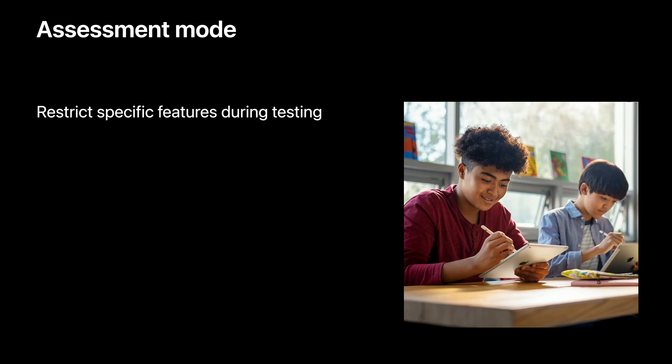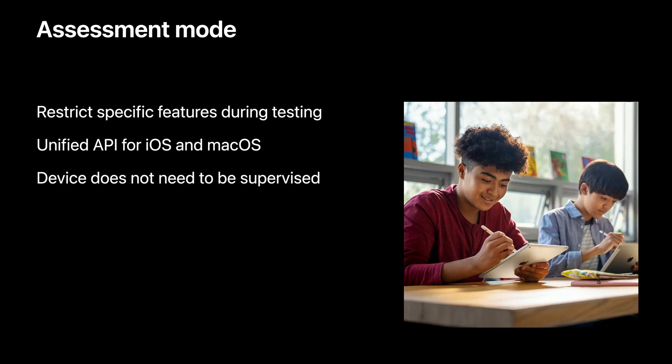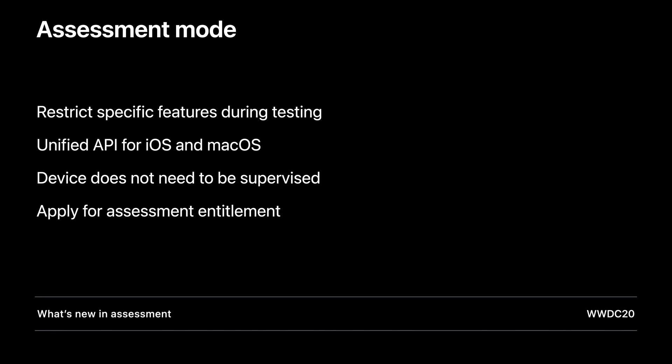Finally, assessment mode. This is the right mode when your app aims to prevent unfair advantages by restricting certain features during testing. Turn off autocorrect, spell check, and single app mode locks to the app so the test taker can't access outside notes or resources. Recently, these frameworks have been unified for iOS and macOS with the introduction of the Automatic Assessment Configuration framework. The device does not need to be supervised, but you do need to apply to Apple for an assessment entitlement for your app. More information about applying for the entitlement can be found in the developer documentation. My colleague Josh has a fantastic WWDC session that explains how to use the Automatic Assessment Configuration framework, including tons of code examples and documentation resources — please go check it out.